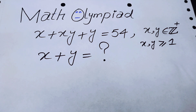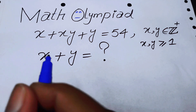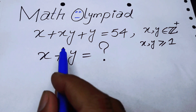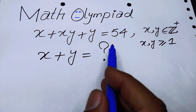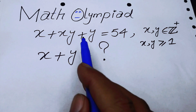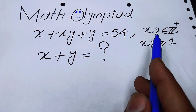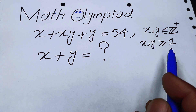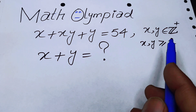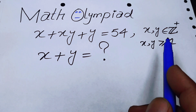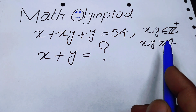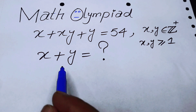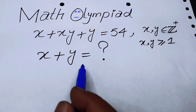Hello everyone, welcome back to the Map of Mathematics. In this video we are going to solve this nice system of equations: x + xy + y = 54, where x and y are positive integers greater than or equal to 1. We will find the value of x + y.